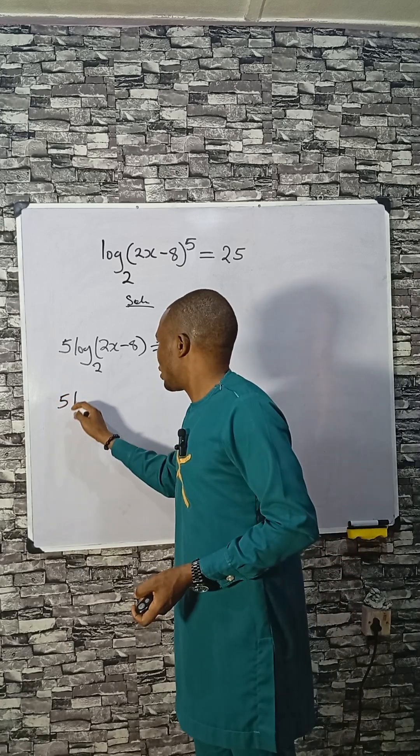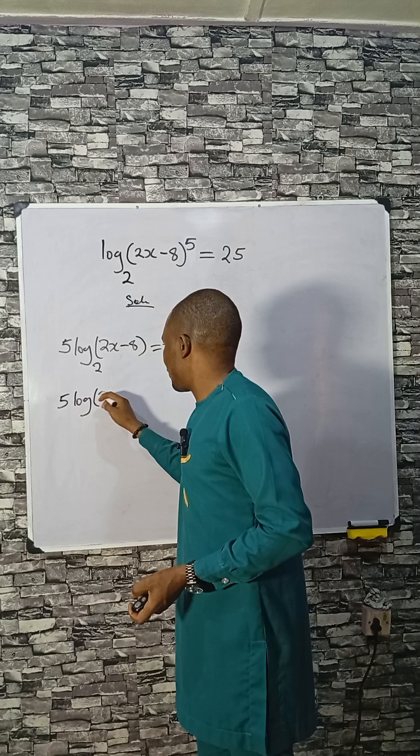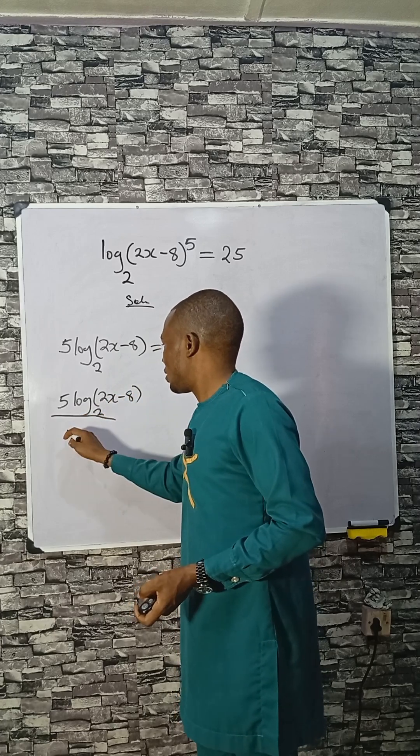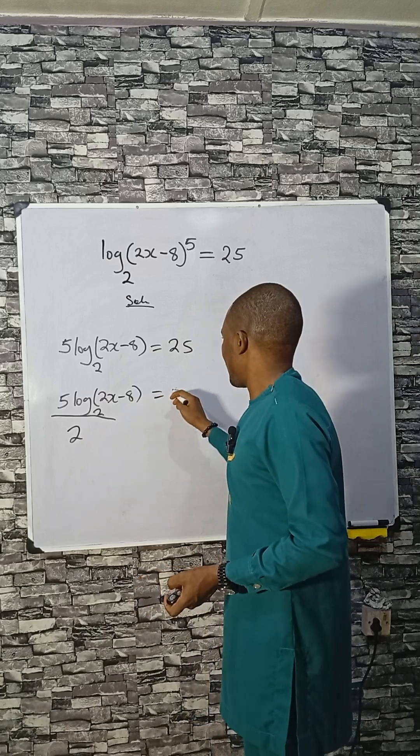The second step is to divide through by 5. If you do that, the value is divided by 5.